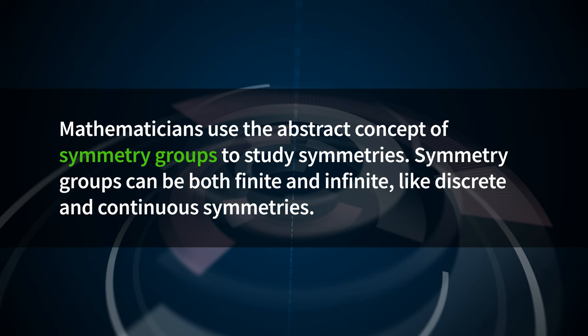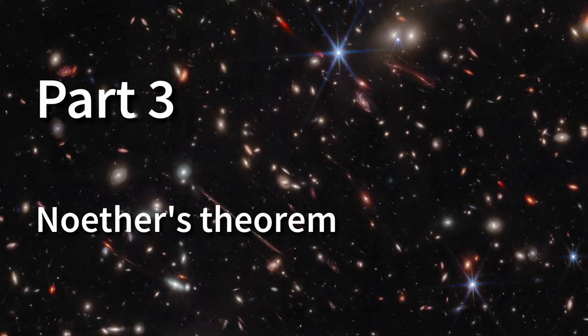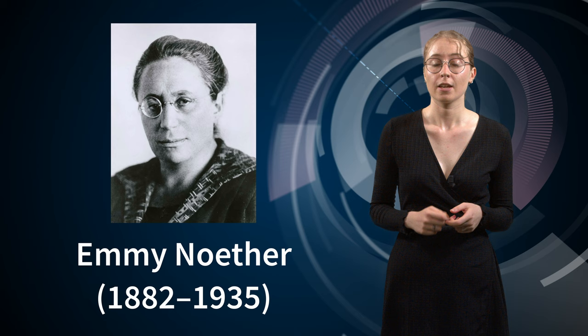With that, this is the end of our little journey into mathematical group theory — we are about to dive right back into the physics. In this chapter, we learned that mathematicians use the abstract concept of symmetry groups to study symmetries, and that symmetry groups can be both finite and infinite, corresponding to discrete and continuous symmetries. Now that we have some understanding of the way scientists formalise descriptions of symmetry, it is time to find out exactly why they are so interested in them in the first place.